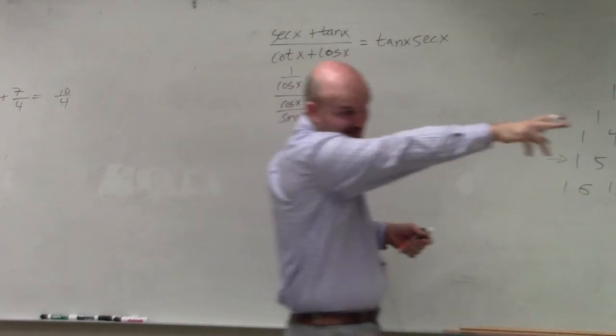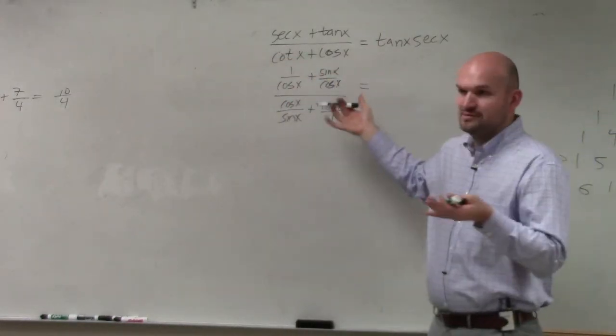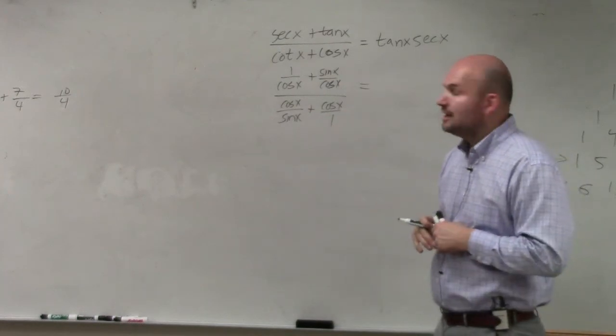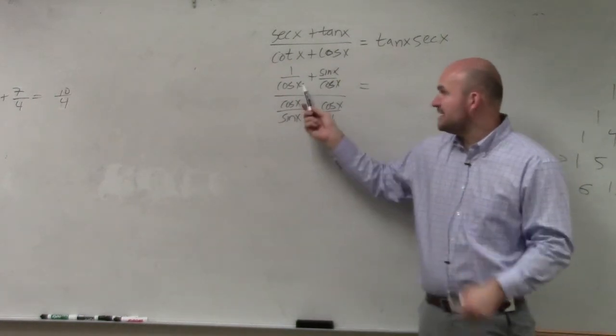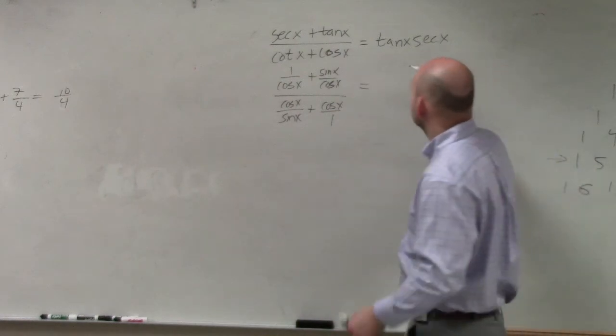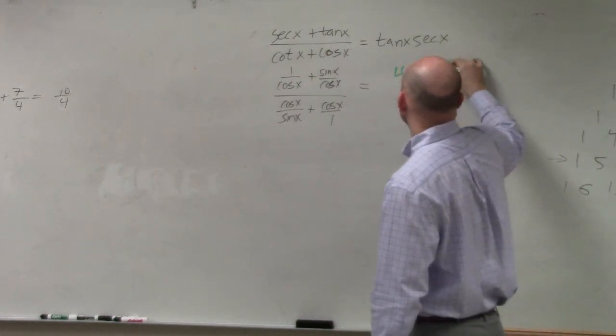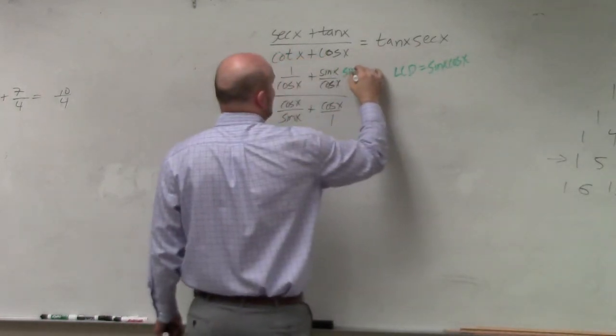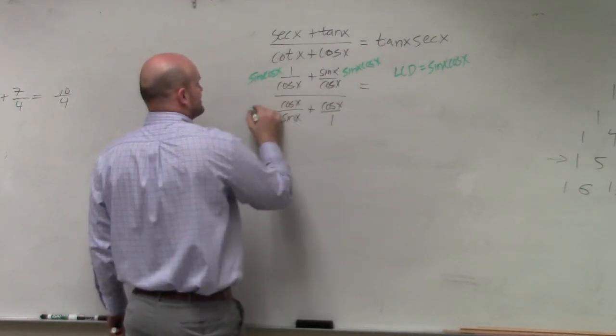So like my fraction over there, what I would do is instead of combining these, I would look into finding the common denominator. So what is my common denominator between cosine, sine, and one? Least common denominator would be the product of sine of x, cosine of x. So what I'm going to do is I'm going to multiply everything by sine of x, cosine of x.